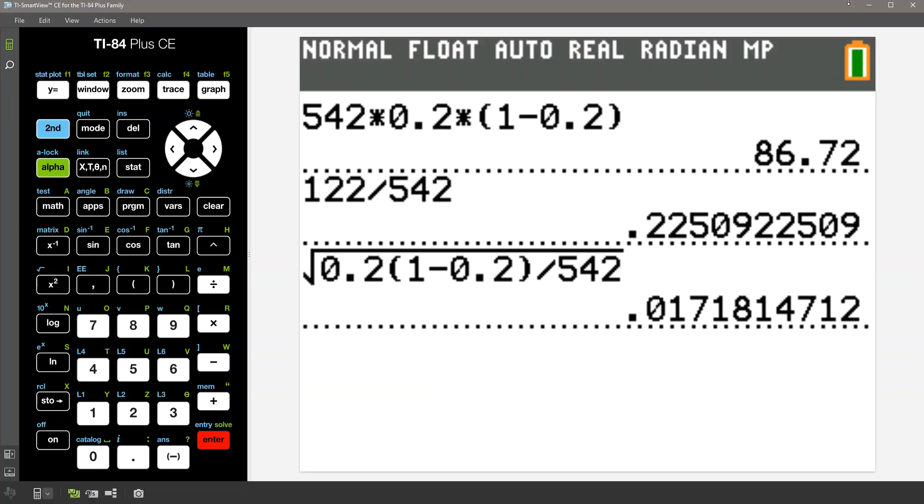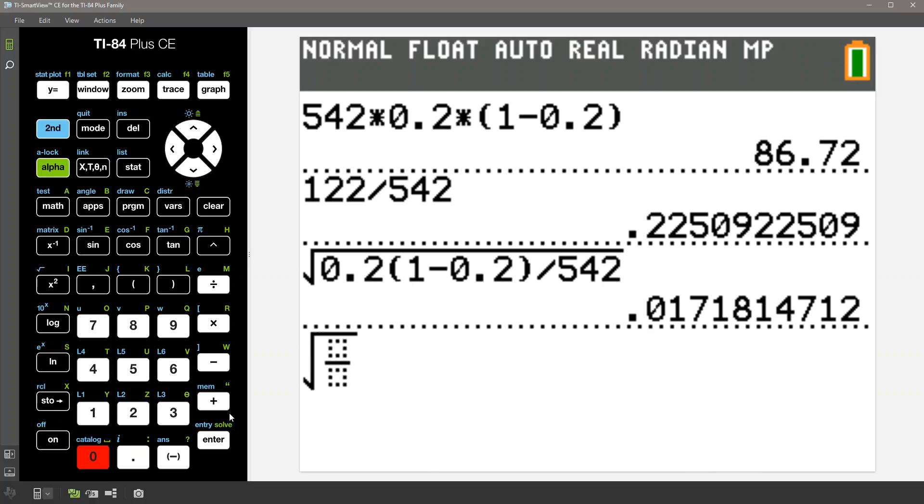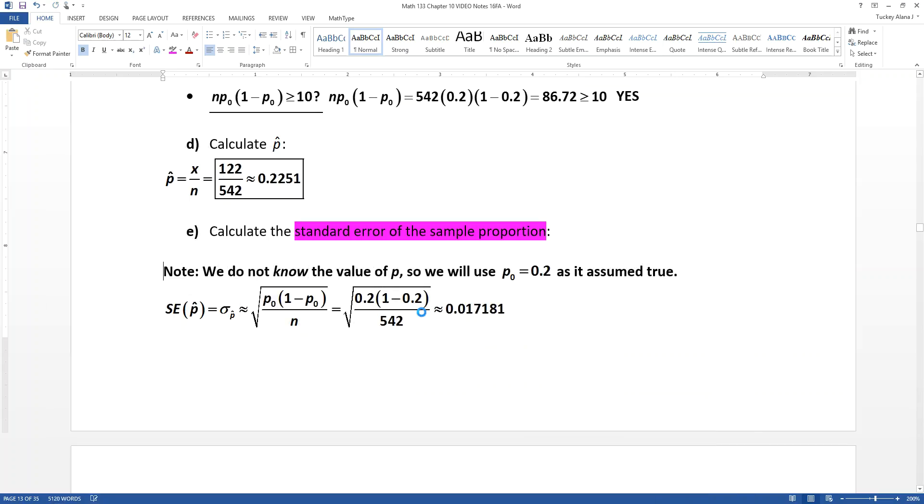You could also use the fraction underneath the square root if you so desire. But hit the second square root, then hitting alpha F1. You want number one, which is numerator over denominator. And then it looks like this. If I can get my 2 in there. There you go. So there we have that. There's our standard error.